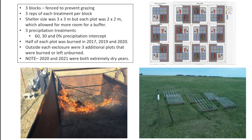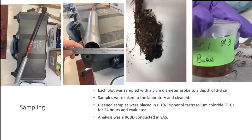Each drought-by-burn combination was replicated three times within exclosures, and each exclosure was replicated three times — three replicates per block and three blocks total. In addition, we had three plots outside the exclosures to examine grazing effects; those did not have the rain intercept shelters since livestock had access, but they were burned or unburned. For sampling, we used a probe about 5 centimeters in diameter, going down 2–3 centimeters, and cleaned the samples up and put them in tetrazoleum to assess axillary bud activity.